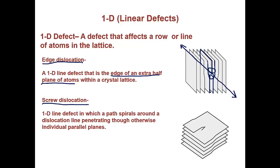We also have screw dislocations, which is a 1D line defect in which a path spirals around a dislocation line penetrating through otherwise individual parallel planes. These parallel planes you can see right here. The path is like a spiral staircase that wraps around and curls down through the planes, and the dislocation line penetrates through these planes right here.